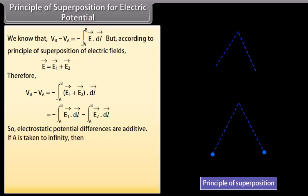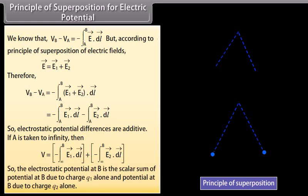If A is taken to infinity, then V equals the sum of minus the integral from infinity to B of E1·dL and minus the integral from infinity to B of E2·dL. So the electrostatic potential at B is the scalar sum of the potential at B due to charge Q1 alone and the potential at B due to charge Q2 alone. This result is applicable for any number of charges.